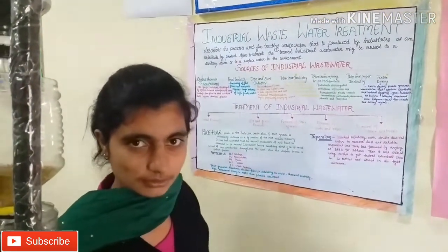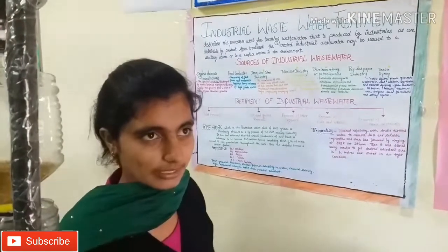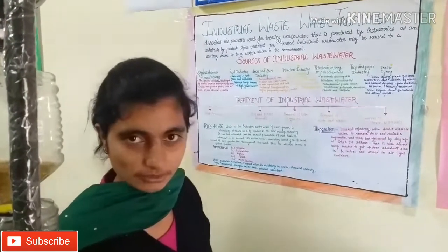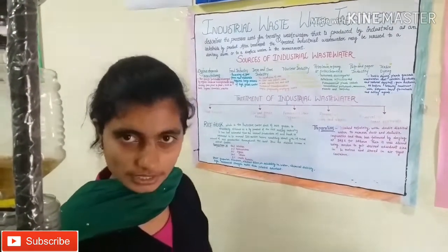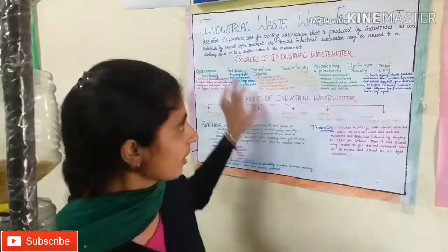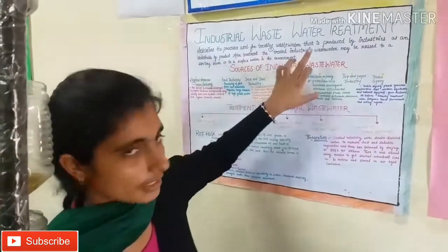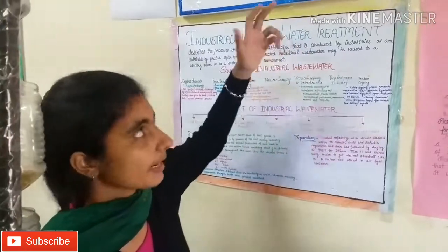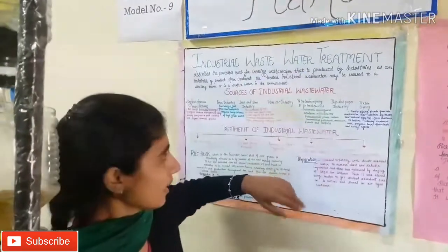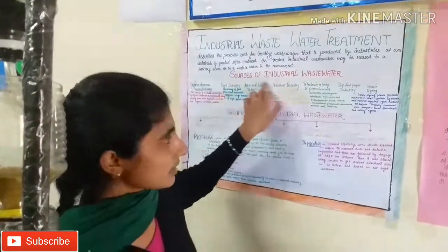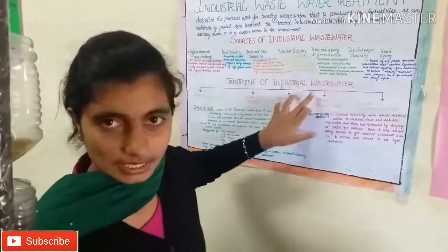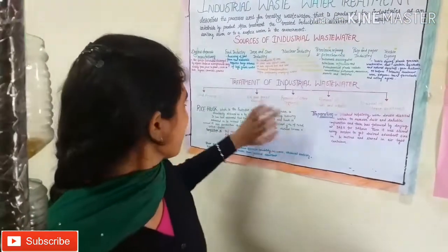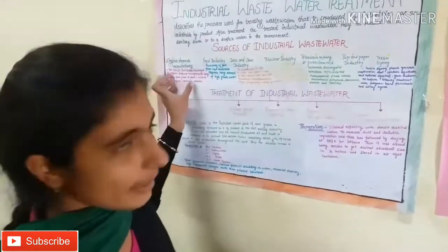We have used waste water from industrial sources. We have produced outputs from industrial waste water. We have made farming products and used water plants. It is used in organic chemicals, which we have manufactured.